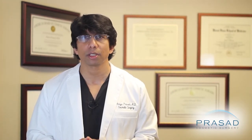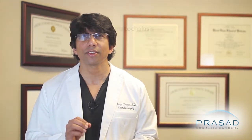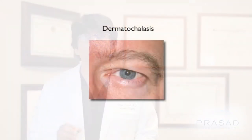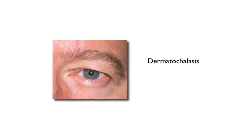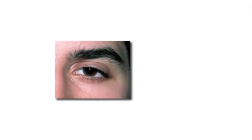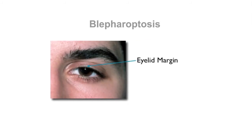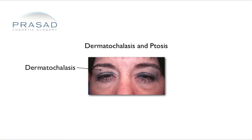Let's get some terminology clear. Excess skin over the eyes causing hooding and a tired appearance is called dermatochalasis. When the eyelid margin is lower than it should be, this condition is called blepharoptosis. Very often, a person can have both dermatochalasis and ptosis at the same time, which can be a challenge to make the proper diagnosis and surgical plan.